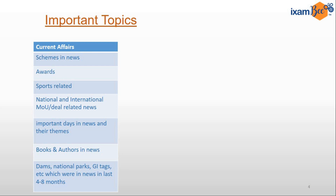Talking about current affairs: schemes covered in the last six months will be included, all awards given recently like the Indira Gandhi Peace Award, sports-related news such as who won the US Open 2020, national and international news, important days and their themes — for example, International Girl Child Day was celebrated on 11th October. Books and authors in news, like Barack Obama's book 'A Promised Land' published in November, and dams, national parks, and GI tags which were in news in the past four to eight months.